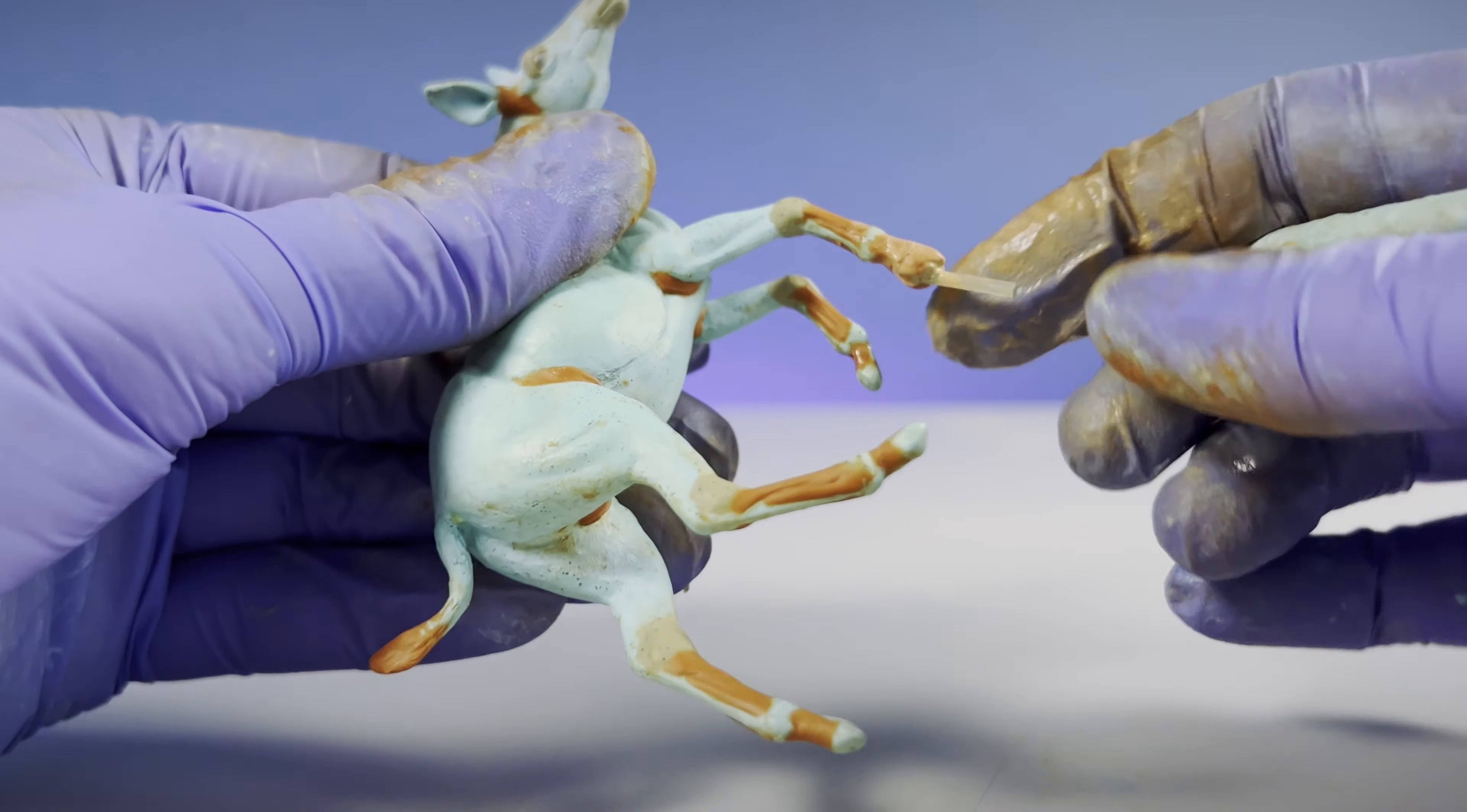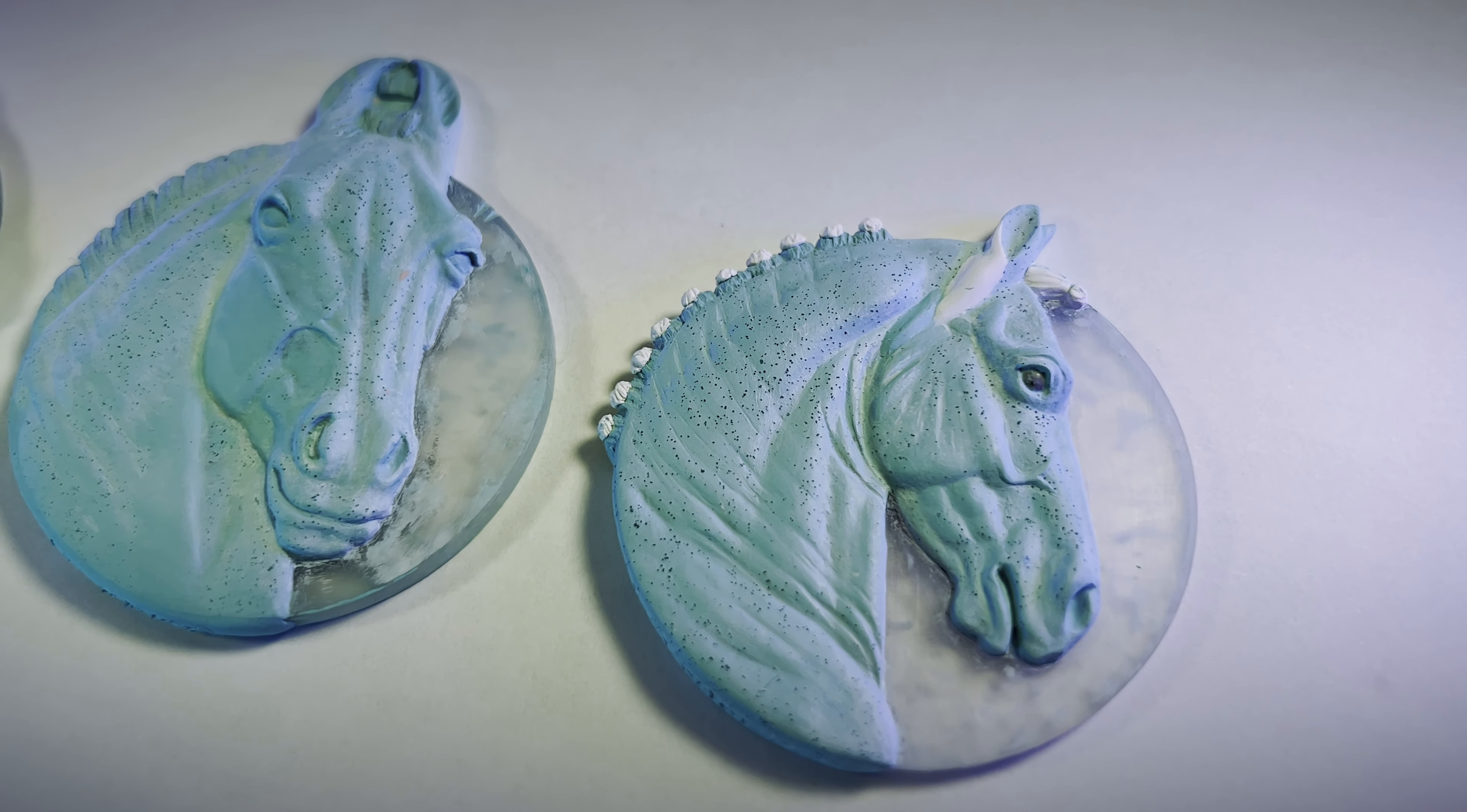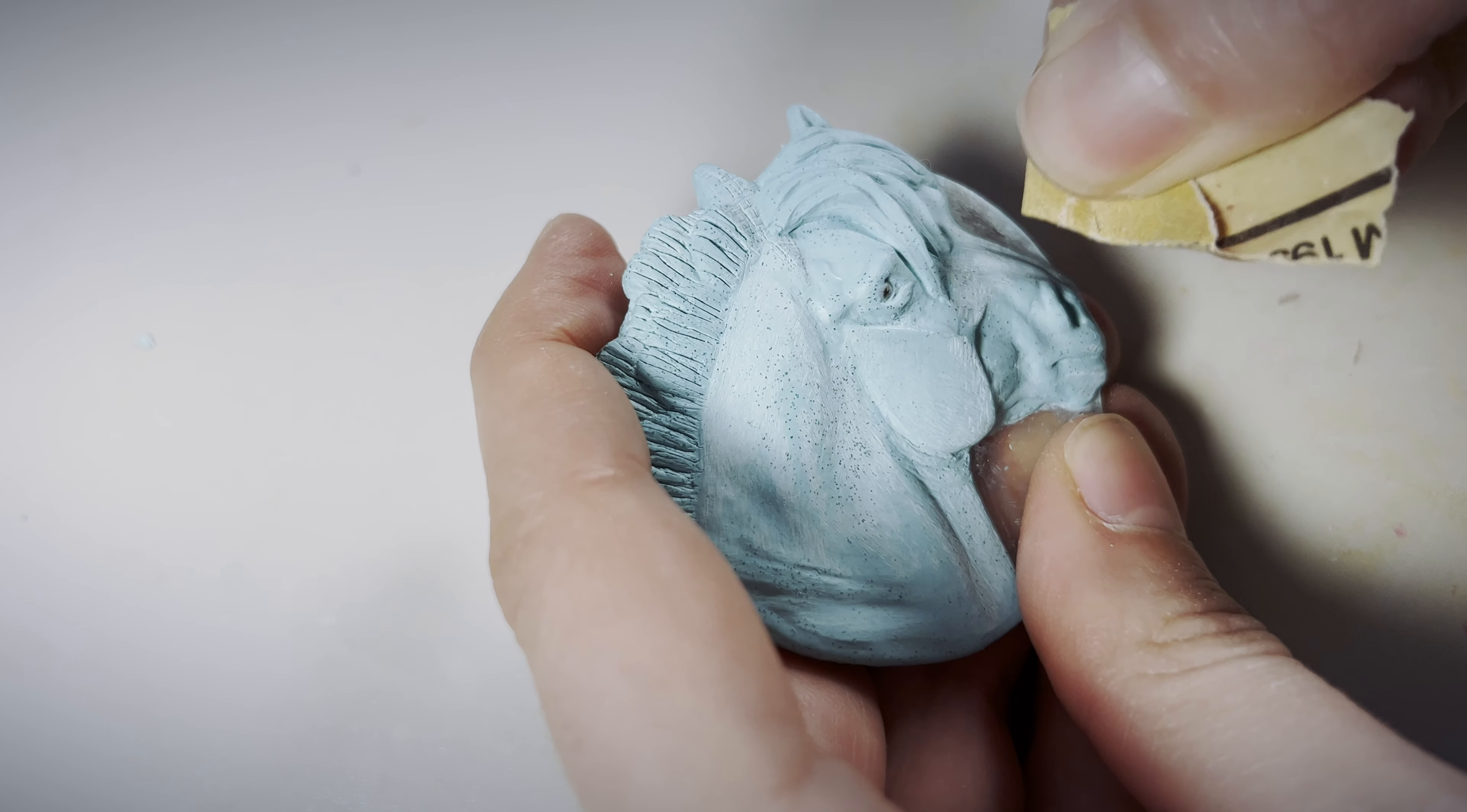Now for my favorite part, sculpting. You can use your glove fingers or tools to make the putty look smooth or textured. Honestly, your hands are your best tools. You can also carve, scrape, or stamp the putty to make it more detailed and interesting.